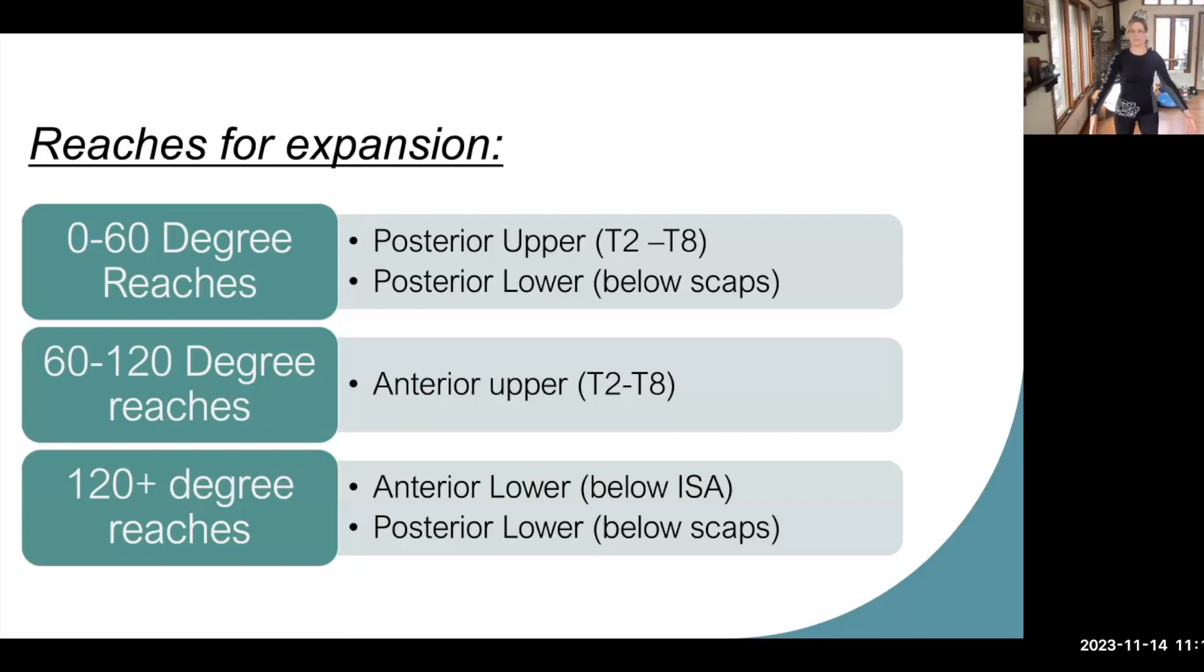Most people have 0 to 60 degrees of true flexion and can get some really nice breath expansion into the back body. And then we also get some anterior expansion as well. This is just a nice reach here in the 0 to 60.